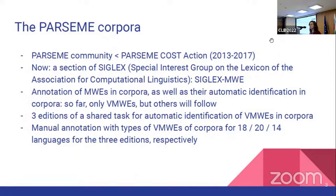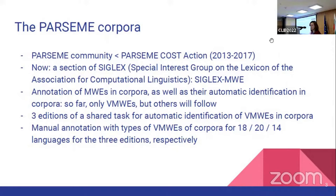PARSEME is an international and multilingual community. The PARSEME cost action took place between 2013 and 2017, and now it is a section of SIGLEX, the Special Interest Group on the Lexicon of the Association for Computational Linguistics. The project focused on the annotation of multi-word expressions in corpora as well as their automatic identification. So far, only verbal multi-word expressions have been annotated, but expressions of other morphological classes will be approached from multilingual perspectives. The three editions covered 18, 20, and 14 languages from several language families.